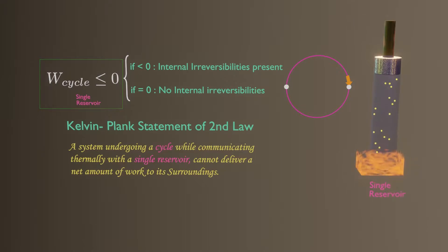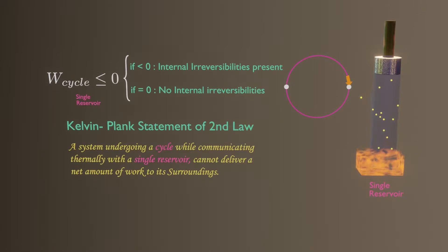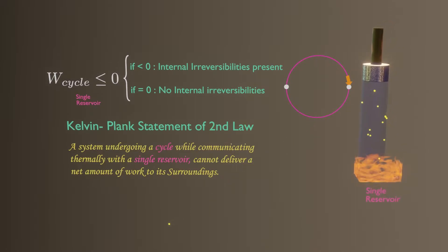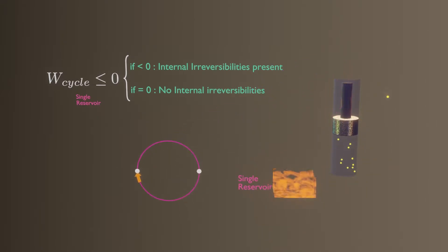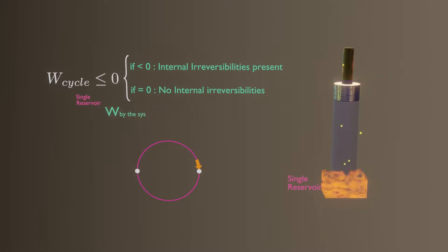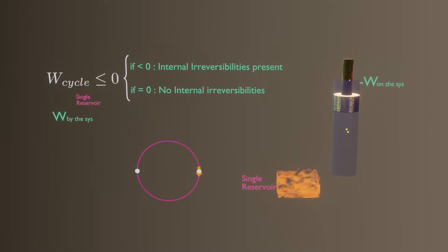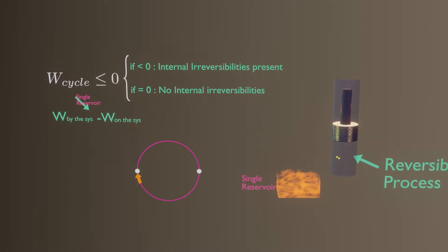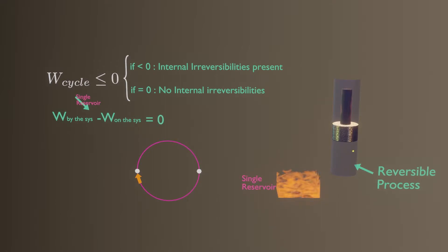The single reservoir is emphasized to show that the system communicates thermally only with a single reservoir as it executes the cycle. You can visualize this inequality using this device. During the first half cycle, it gets heat from the single reservoir and work is done by the piston against atmospheric air pressure. In order to complete the cycle, the atmospheric pressure must pull the piston downward — that is negative work done on the system. If the device is internally reversible, the magnitude of work done by the system equals the work done on the system, so total work done during the cyclic process would be zero.